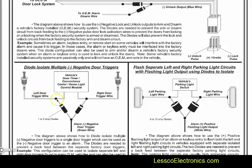If you have a right door and a left door and you don't want one feeding to the other — because there's a GEM module or BCM in between and you don't want to upset the computers — you can double-diode isolate them. You can have it shared to a common input on the alarm going in one direction only, not feeding back to the pin switches or light circuits.